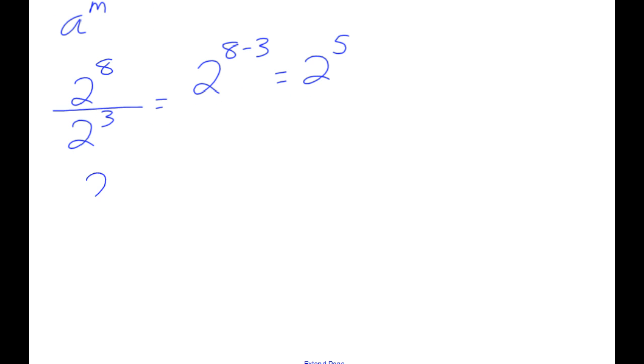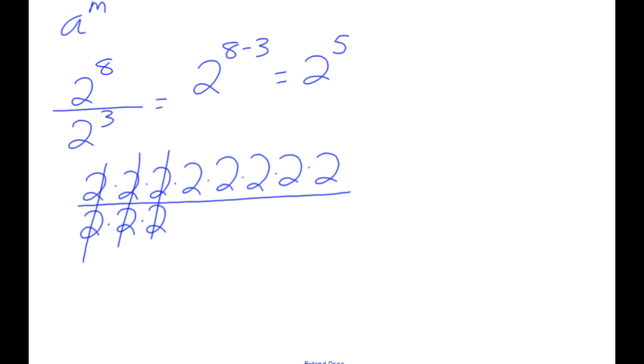2 to the 8th: 1, 2, 3, 4, 5, 6, 7, 8. And that is going to be over 2 times 2 times 2 to the 3rd. These cancel, for those people that remember how to cancel. And what is left is 5 of them, which is 2 to the 5th. Just showing it in a couple different ways.